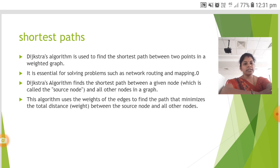Dijkstra algorithm finds the shortest path between a given node which is called the source node and all other nodes in a graph. This algorithm uses the weights of the edges to find the path that minimizes the total distance between the source node and all other nodes.